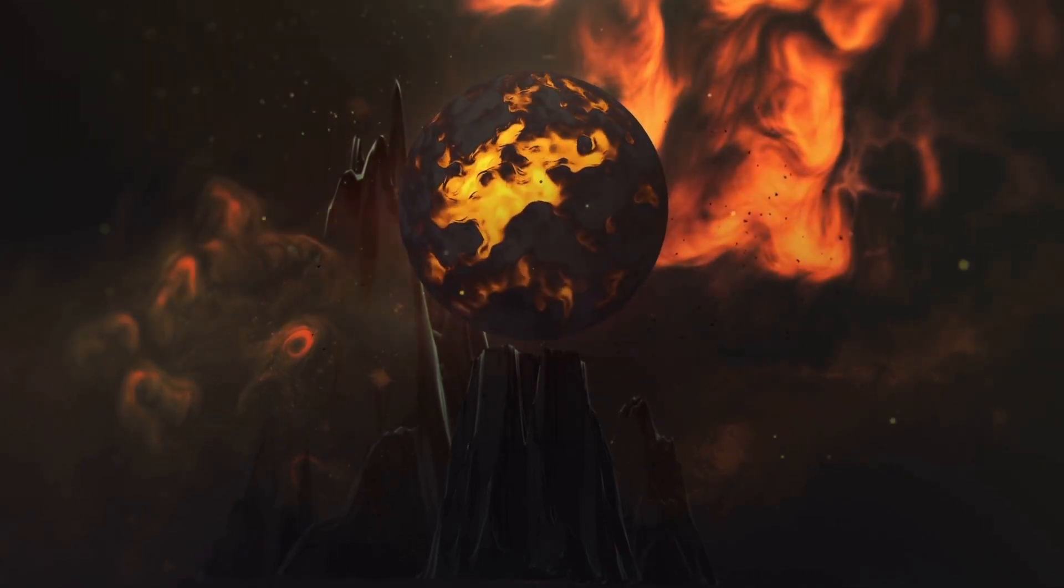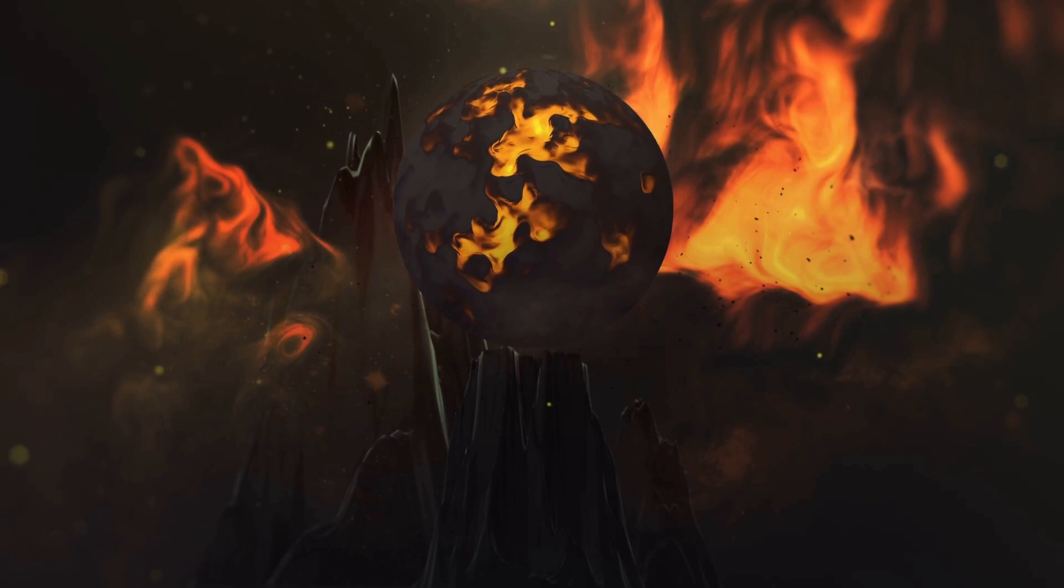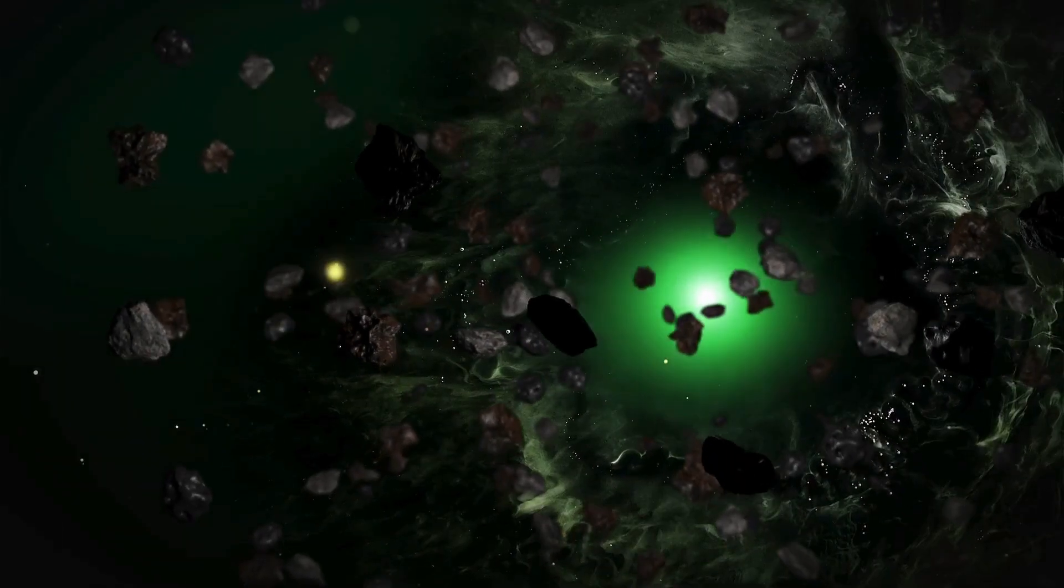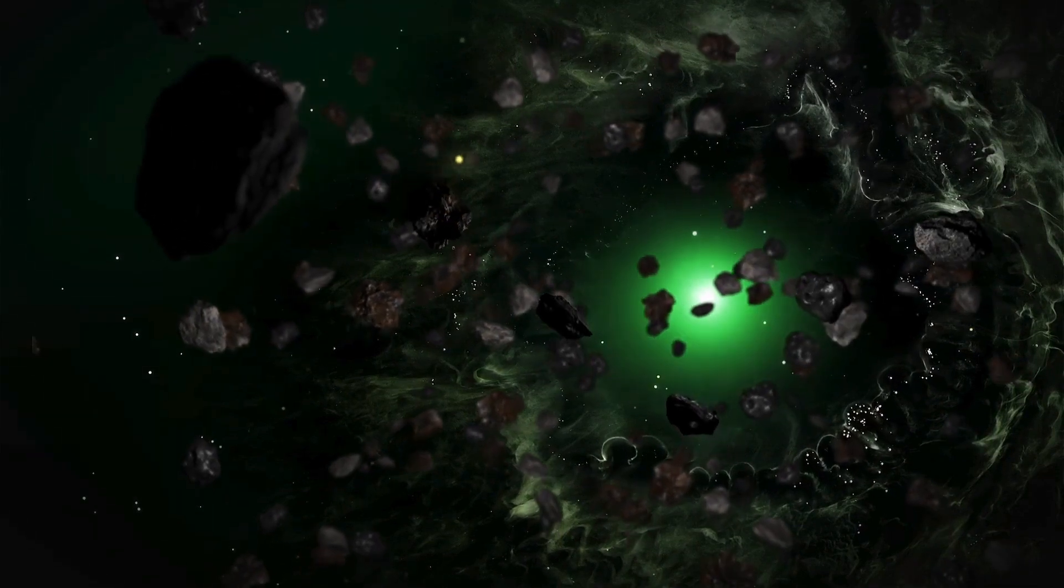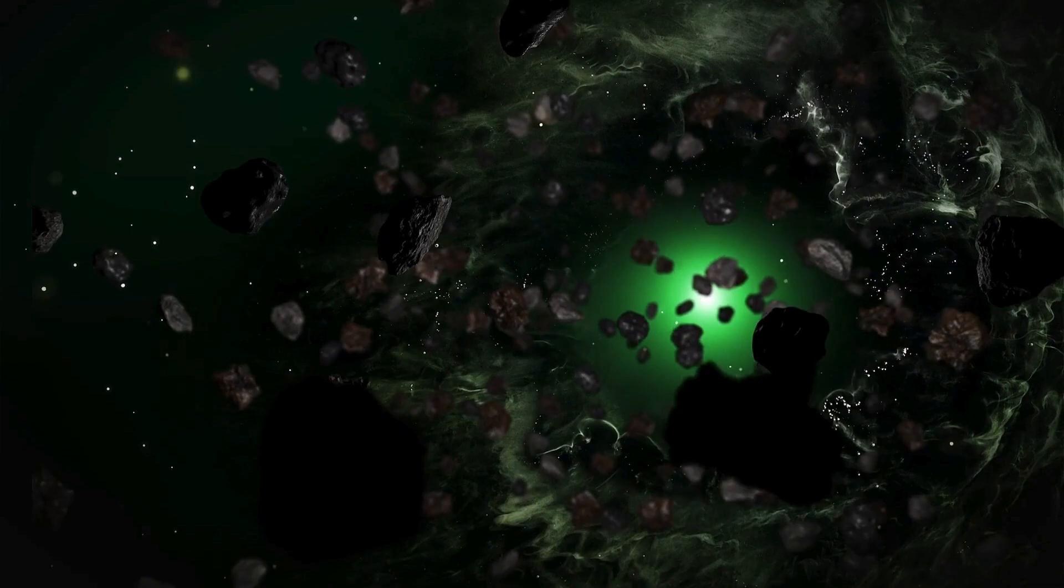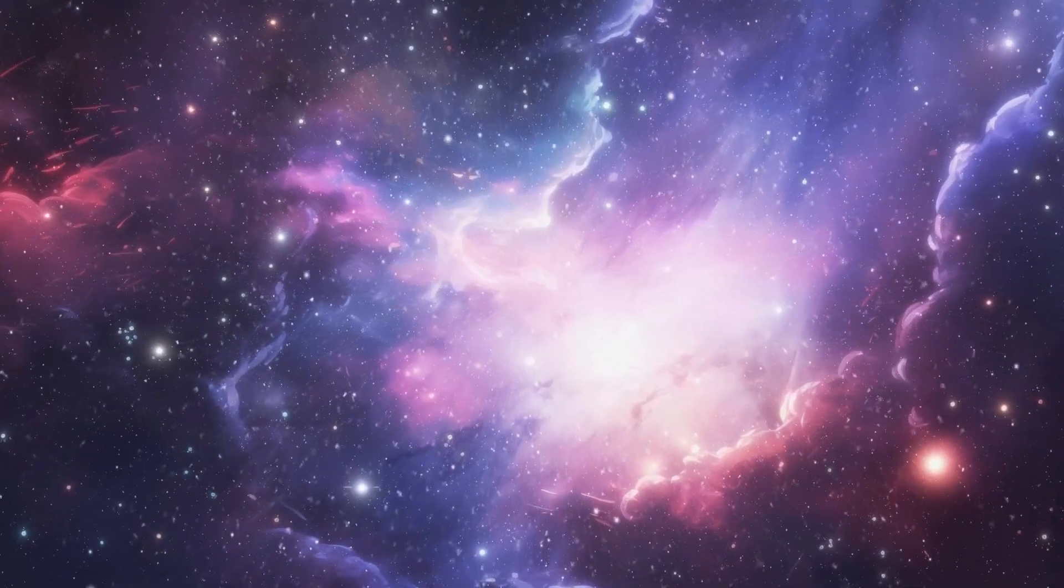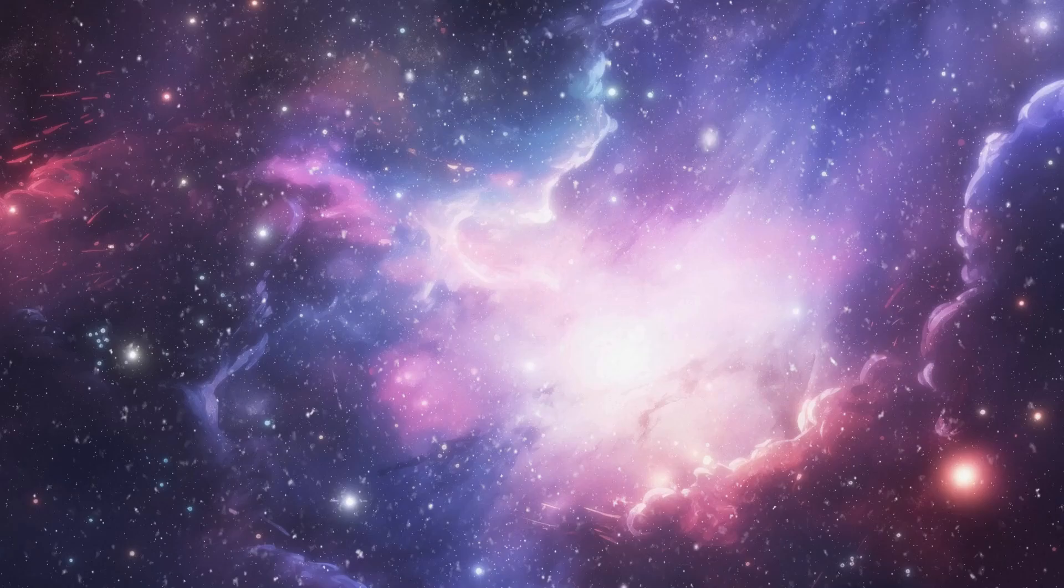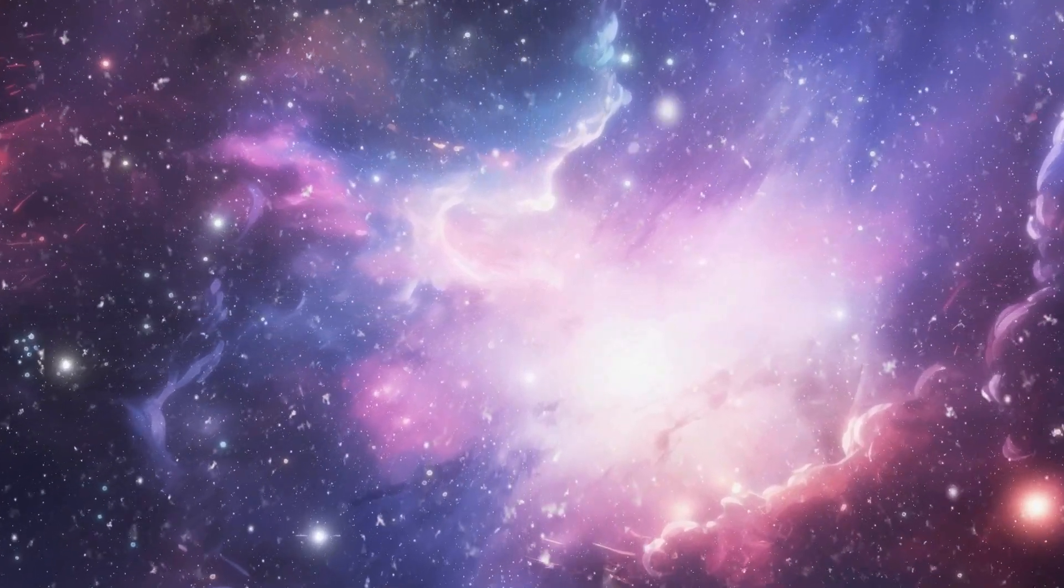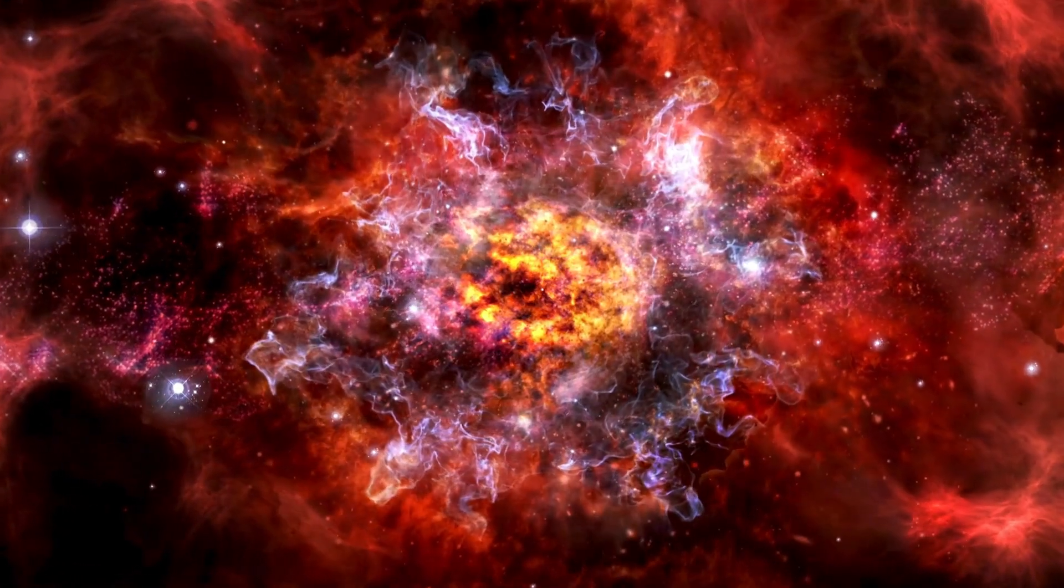The implications are profound. Traditional theories suggest that red supergiants like Betelgeuse steadily shed mass before their explosive demise. However, the sheer scale of this ejection challenges this notion, hinting at a more turbulent and perhaps unpredictable final phase for these stars.